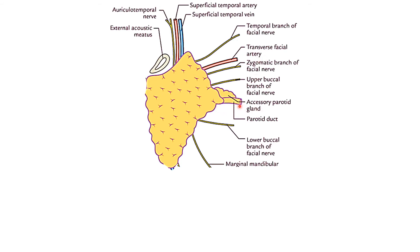Another structure emerging along the anterior border is the parotid duct. It is placed between the upper and lower buccal branches of the facial nerve. So along the anterior border we have four of the five terminal branches of the facial nerve, plus the transverse facial artery between the temporal and zygomatic branches, and the parotid duct between the upper and lower buccal branches.